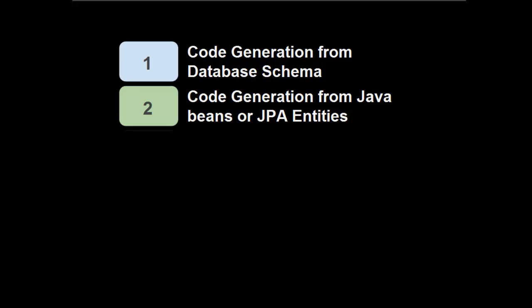One of the things to know is that the scaffolding wizard has a lot of different panels, and you will be presented with those panels based on the selections you make on earlier panels. To cover the vast majority of the panels, we're going to go through two scenarios. The first scenario is code generation from a database schema, and the second scenario is code generation from Java beans or JPA entities.